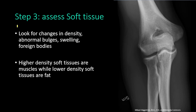Now moving to step three, which is the assessment of the soft tissues. In elbow x-rays you look for changes in density of the soft tissue, abnormal bulges, swelling, and foreign bodies. An important note: higher-density soft tissues are the muscles while lower-density soft tissues are the fat.